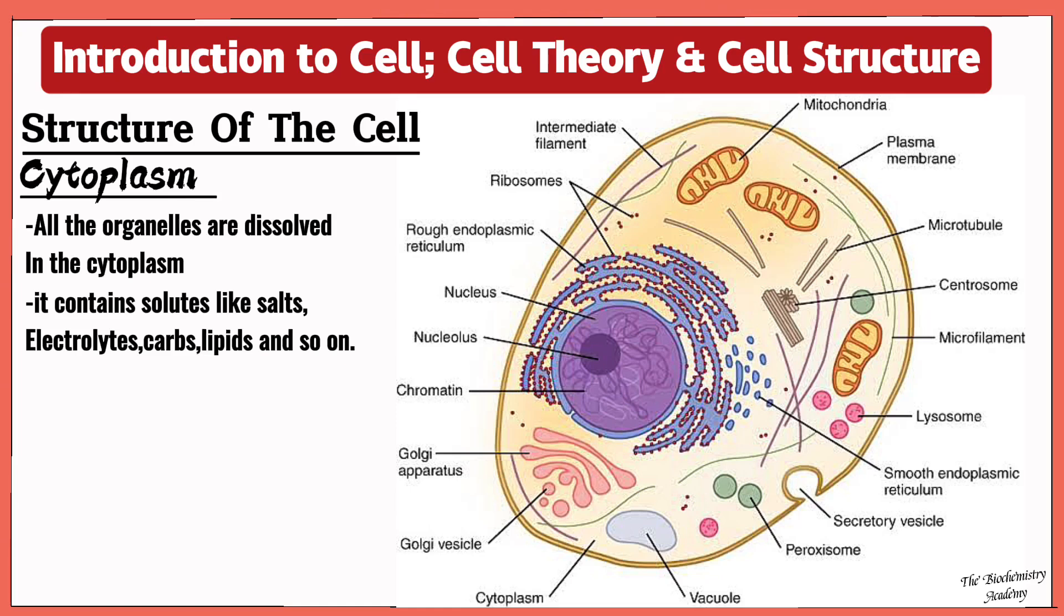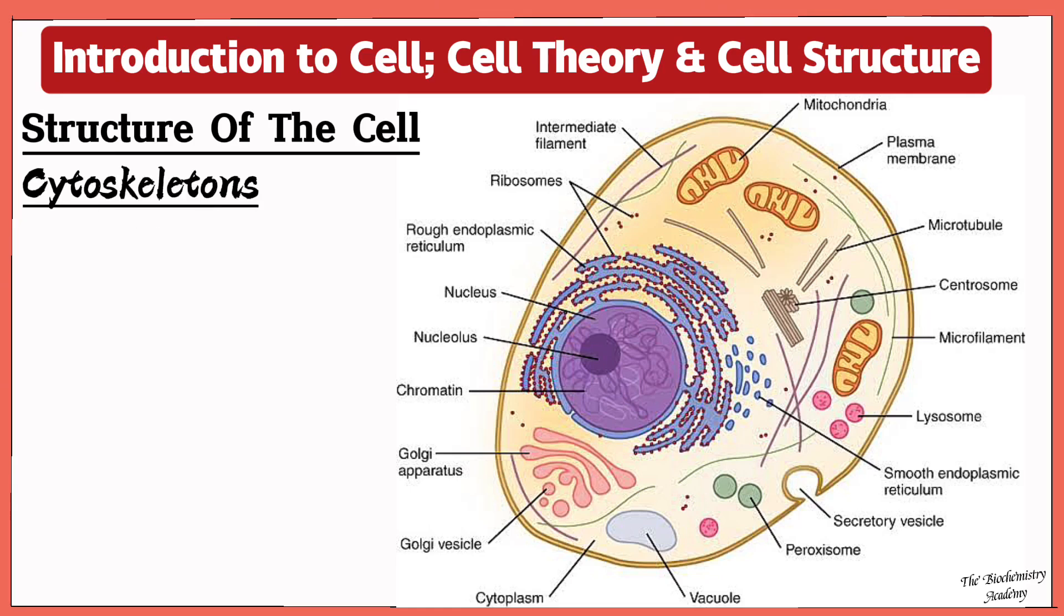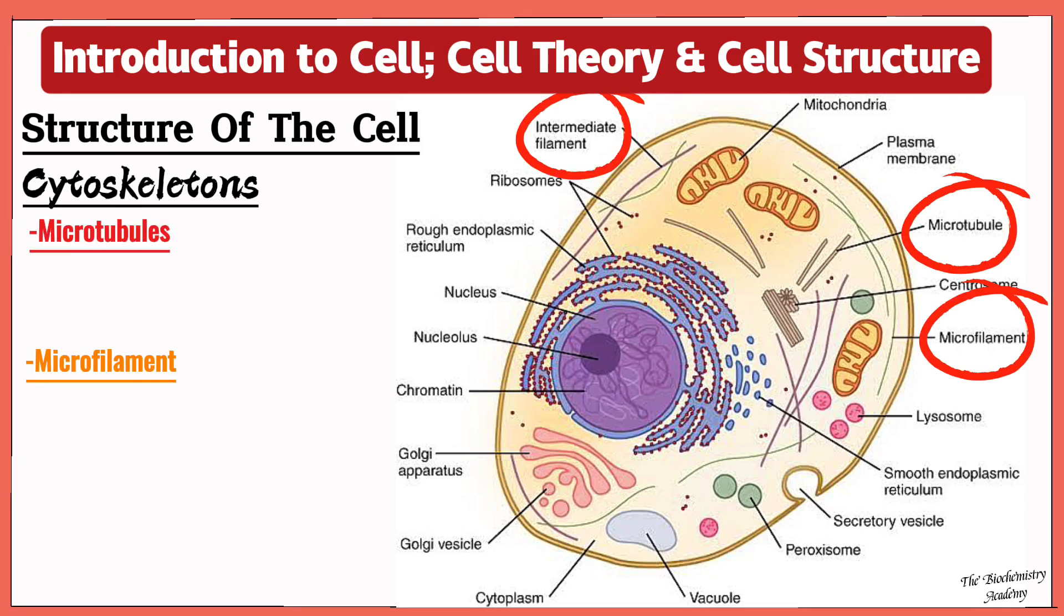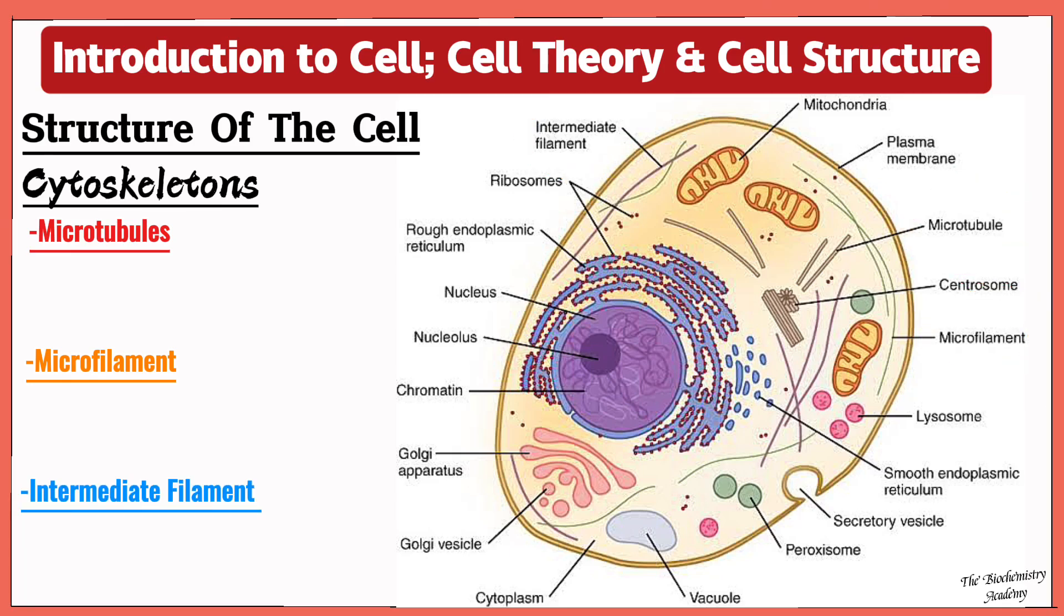We will now talk about the cytoskeleton which aids to maintain the structure and the shape of the cell. Now it consists of three fibers which are the microtubule, the microfilament, and the intermediate filament. The microtubule is the largest of the three fibers. It is made up of tubulin, which is a type of protein, and it aids in structural support and in transportation.